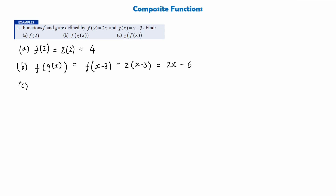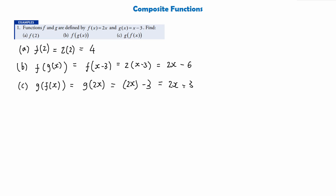Moving on to part c, we are asked to find the composite function g of f of x. Remember the order is very important here — whatever is outside the bracket is the function you're ultimately going to be working out. So this time we know we're going to get a different value. We're going to look for g of f of x which is 2x, and we substitute 2x into g of x wherever we have any x's, giving us 2x minus 3, which is our composite function of g of f of x. As you can see, these two results are different.